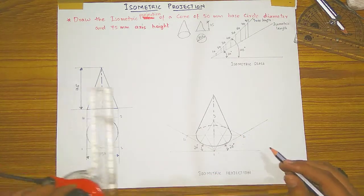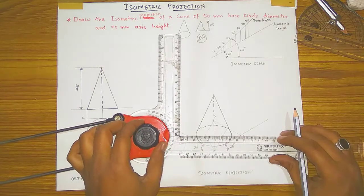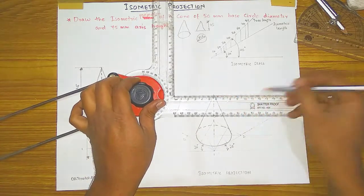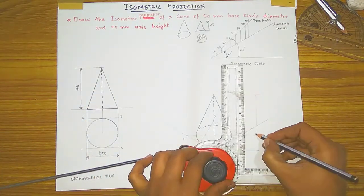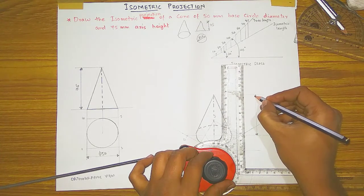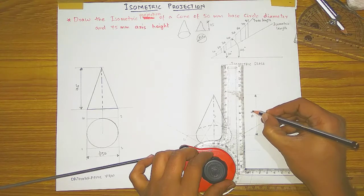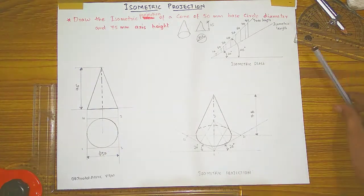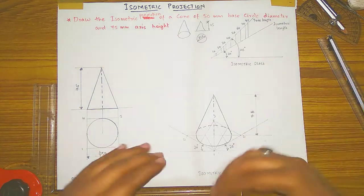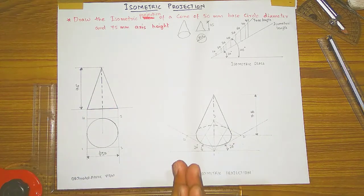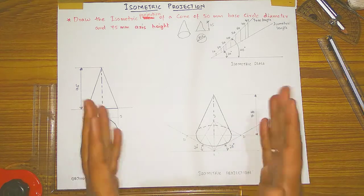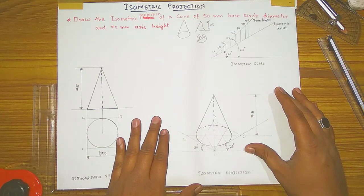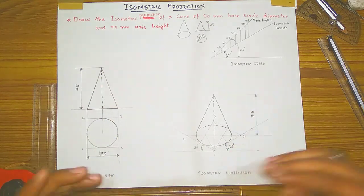To show the dimensions, take extension lines along the axis and draw the dimensioning line with arrow marks, marking it as 75 mm. This completes the isometric projection of a cone. Please share, watch, and like my videos, subscribe to my channel, and press the bell icon to get more notifications. Thank you.